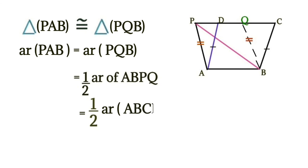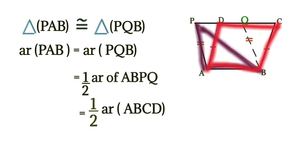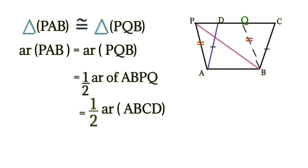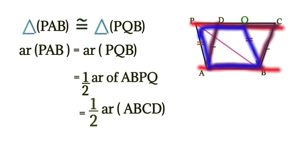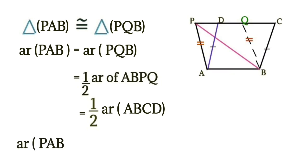We can write for the other parallelogram also. That is, area of triangle PAB is equal to half of the area of parallelogram ABCD. Because the two parallelograms are on the same base and between the same parallel lines, their areas are equal, so we replace one parallelogram with the other. Hence, we have proved that the area of triangle PAB is equal to half of the area of parallelogram ABCD.